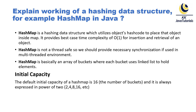The default initial capacity of HashMap is 16, which is nothing but the number of buckets. It is always expressed in the power of 2 — like 2 raised to 1 is 2, 2 raised to 2 is 4, 2 raised to 4 is 16, and so on. Usually we set the capacity of HashMap in the power of 2.